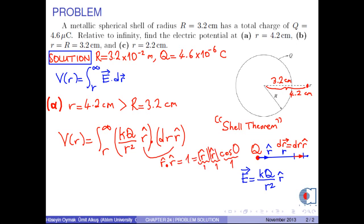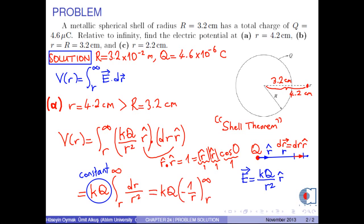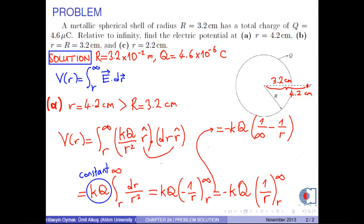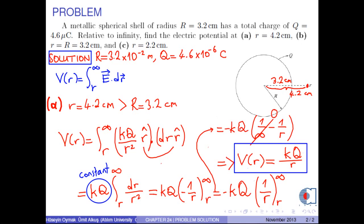r-hat dot r-hat gives 1, since r-hat is a unit vector and parallel to itself. So we obtain k times q times the integral from r to infinity of dr over r squared. The integral of dr over r squared is negative 1 over r. This gives negative k q times 1 over r evaluated from r to infinity, which equals negative k q times (1 over infinity minus 1 over r). Since 1 over infinity is 0, relative to infinity, the potential outside the sphere is k q over r.